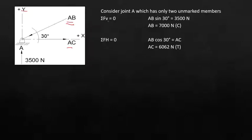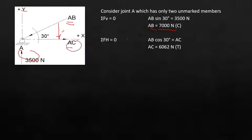Summing forces vertical along y, AB times sine 30 degrees equals 3500 newtons, so by calculator AB equals 7000 newtons. Then summing forces horizontal, AC equals AB times cosine 30 degrees. Therefore AC is in tension and AB is in compression, which we expected.